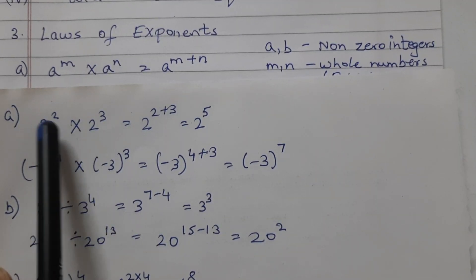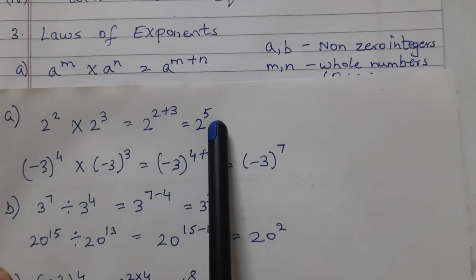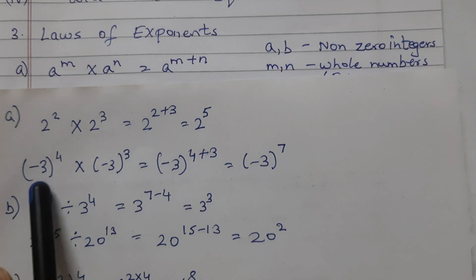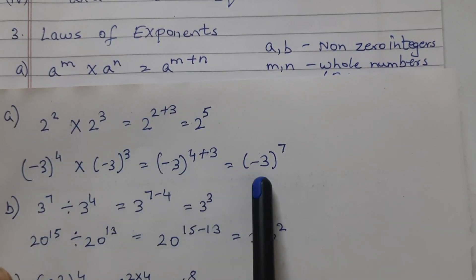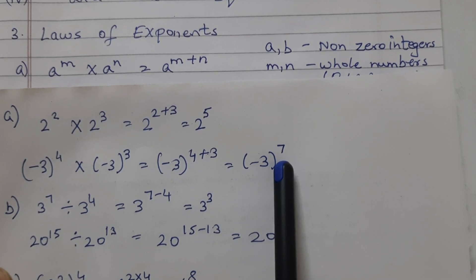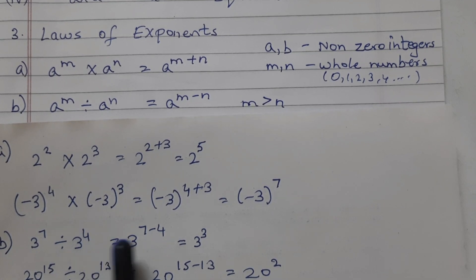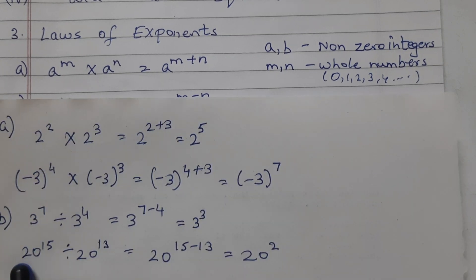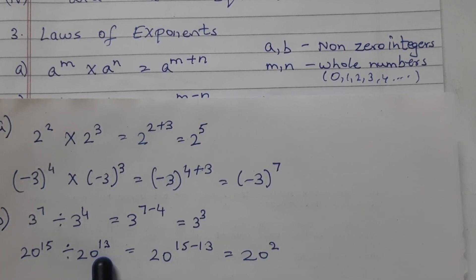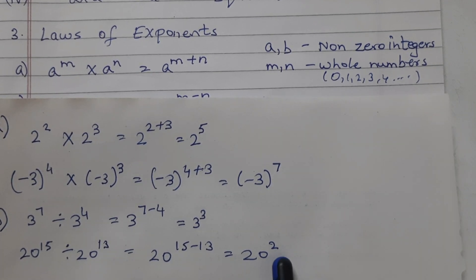Now let's see examples for all these laws of exponents. Same base, multiplication sign — add the exponents, and that's the answer: 2 raised to the power of 5. Same base, multiplication sign, add the exponents — the answer is minus 3 raised to the power of 7. Same base, division sign, subtract the exponents: 7 minus 4 is 3, so 3 raised to the power of 3. Same base, division sign, subtract the exponents: 15 minus 13, giving 20 raised to the power of 2.